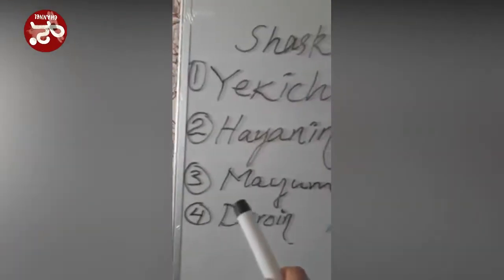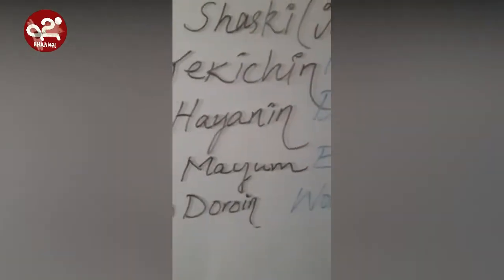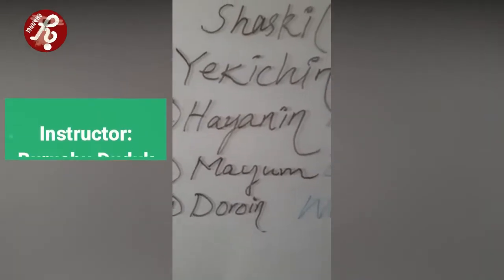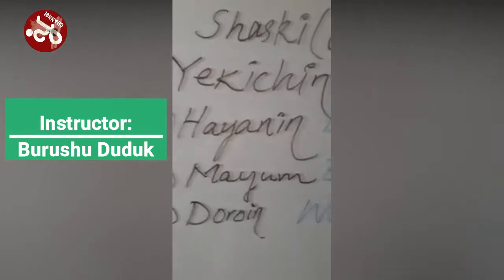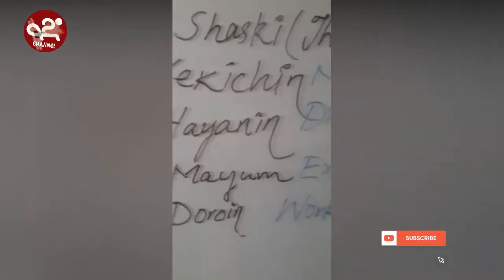The third element is 'Mayum.' Mayum is like the existence of something — it is, it was, it were, they were, or they will be. In Burushaski these are: Bi, Dua, Bai, Bu, Bica, Ban. These are called Mayum.